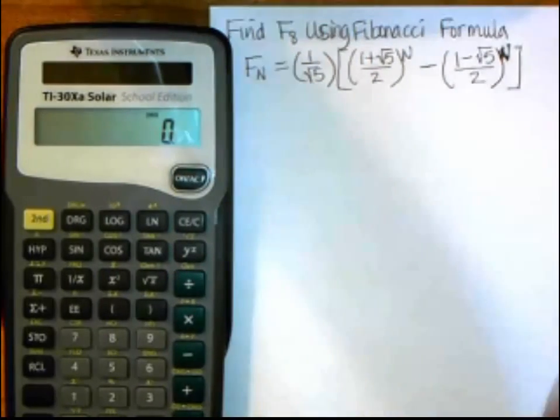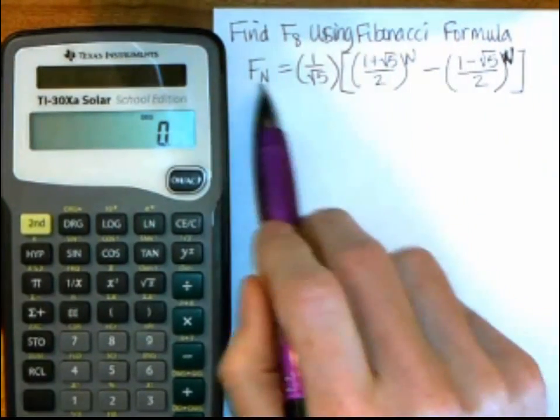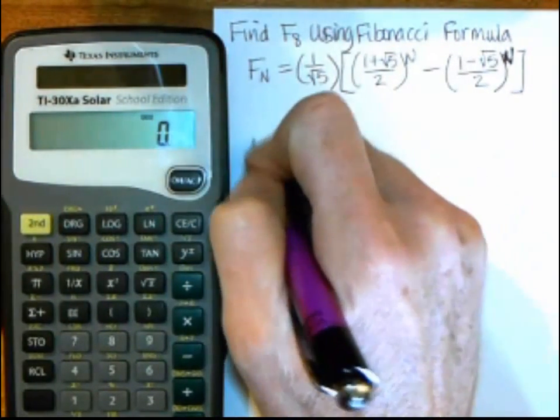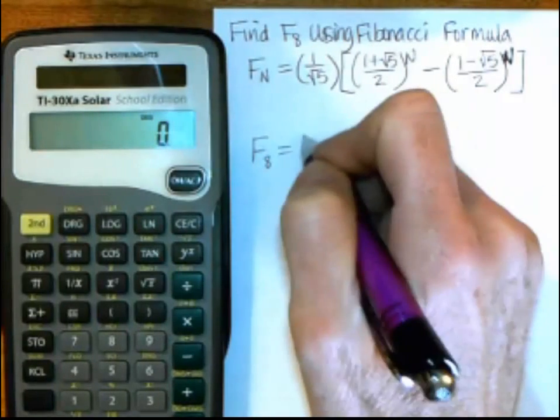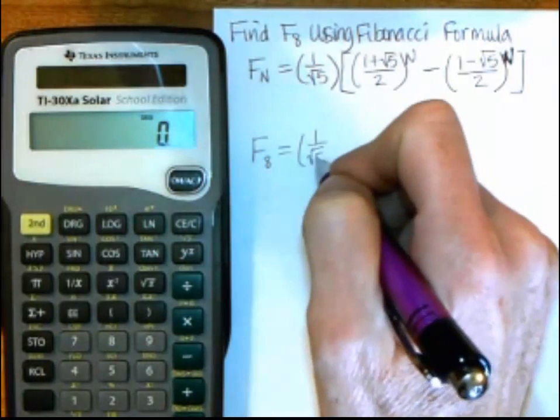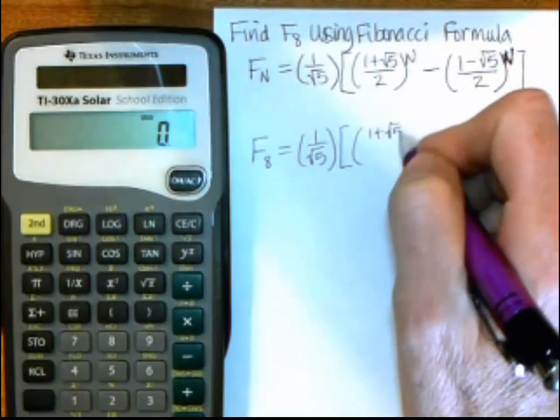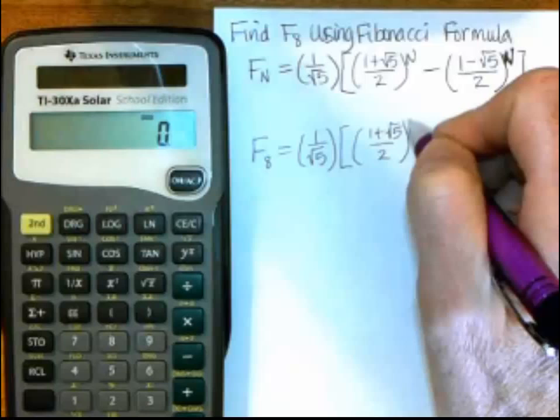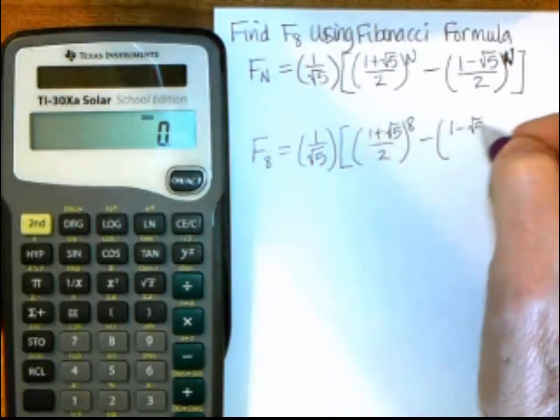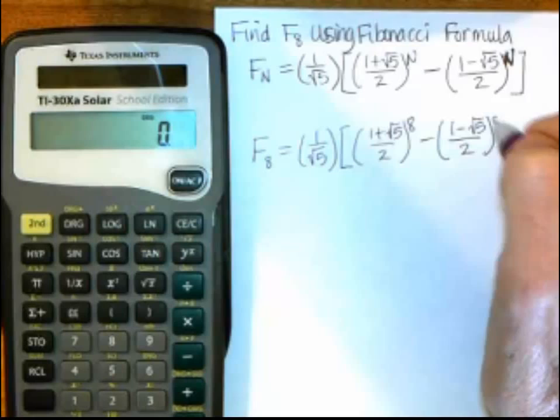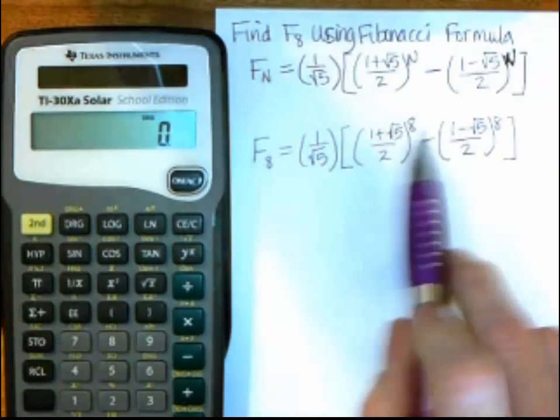We want to first find F sub 8 using the Fibonacci formula, and here's the formula. So I just want to plug in where the capital N is. I'm going to plug in the 8. So I have 1 over square root of 5 times this quantity, 1 plus square root of 5 over 2 to the 8th power, minus 1 minus the square root of 5 over 2 to the 8th power. So where I saw big N, all three places, I put in the 8.